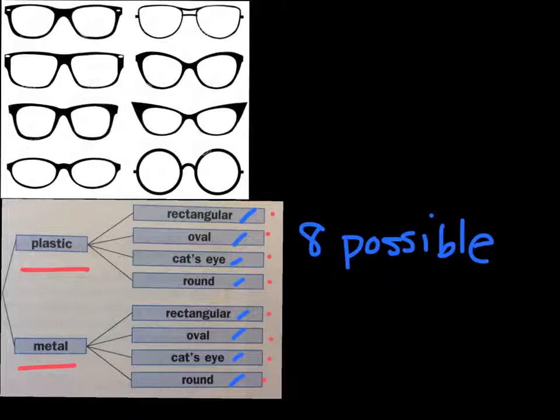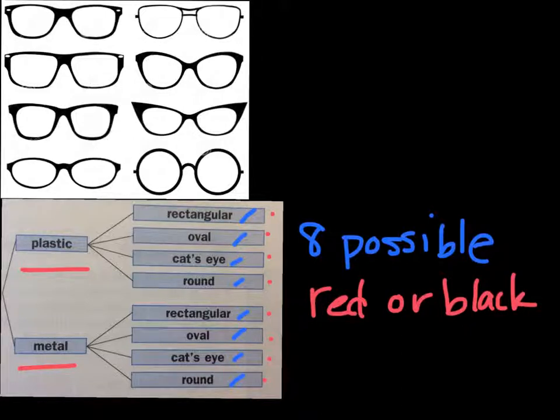Now let's say that each of the different eyeglasses in example 1 also comes in two colors, red or black. Copy the tree diagram in your notebook and add the new choices. Now how many possible choices for frames are there? Press pause while you figure this out.